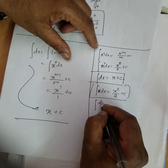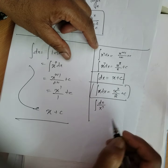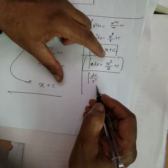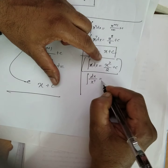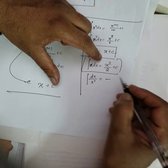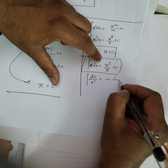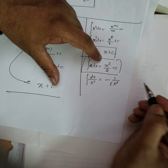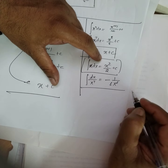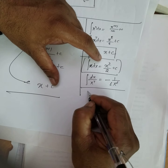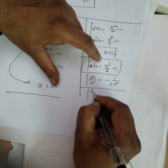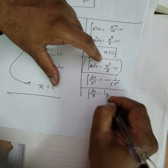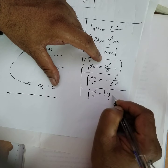For dx by x to the power of 7, whenever it is in the denominator, change the sign, decrease the power by 1, multiply by the decreased power. And dx by x — that is x to the power 1 in the denominator — gives log x.